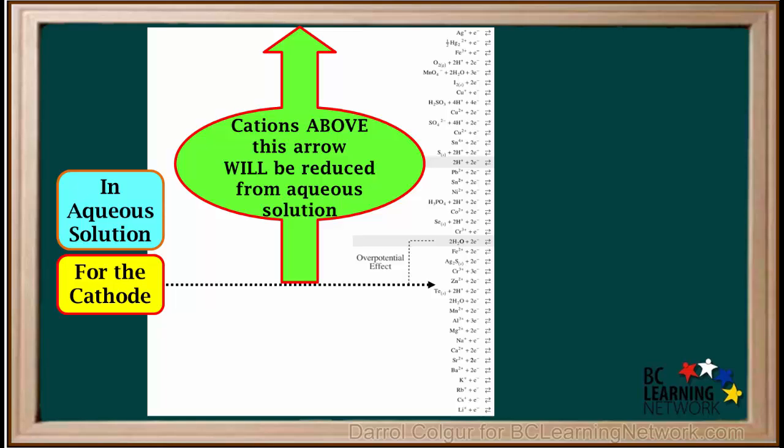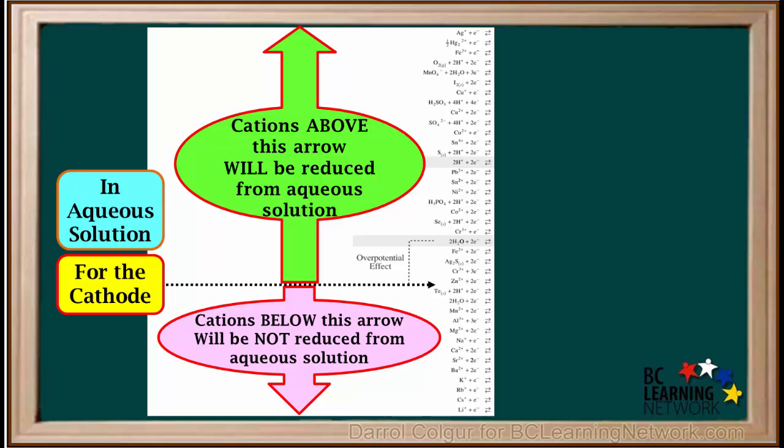Any cations above this arrow will be reduced from aqueous solution. But any cations below this arrow will not be reduced from aqueous solution. If these are present, water will be reduced instead.